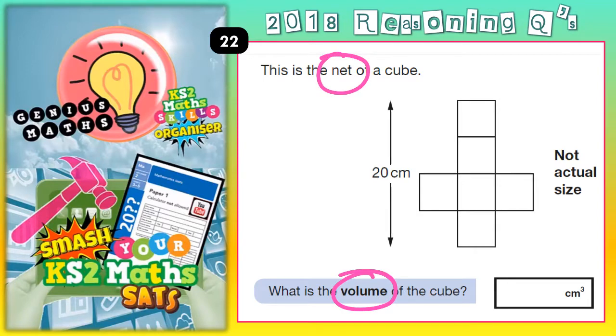A net is basically a 3D shape which has been unfolded and laid flat. So if you unfolded and laid flat a cube, you would get this shape. You might want to try that sometime with a cuboid, and a common cuboid is a cereal box. Next time you finish a cereal box, try unfolding the shape and see what you get. This is the net of a cube.